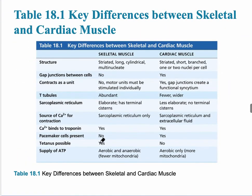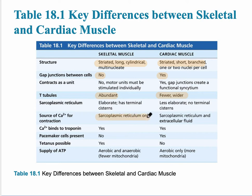This table summarizes the key differences between skeletal and cardiac muscle. Skeletal muscle is long, cylindrical, and multinucleate, whereas cardiac muscle is striated, short, and branched with one or two nuclei per cell. Skeletal muscle has no gap junctions; cardiac muscle does. T-tubules are abundant in skeletal muscle but fewer in cardiac muscle. Calcium comes only from the sarcoplasmic reticulum in skeletal muscle, but also from the extracellular fluid in cardiac muscle.